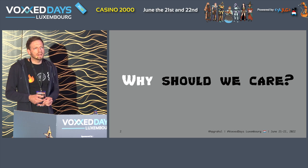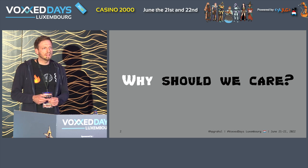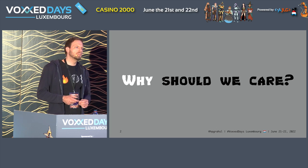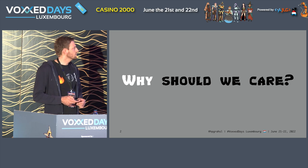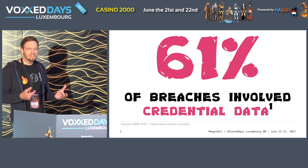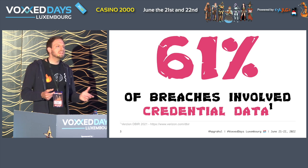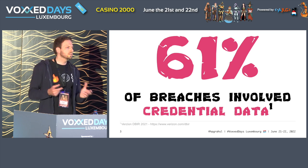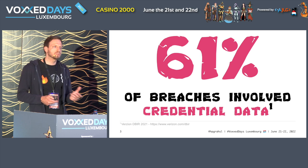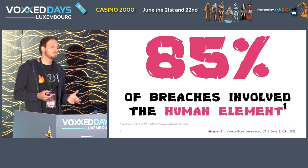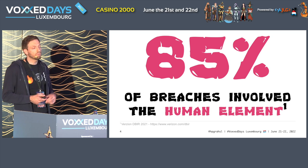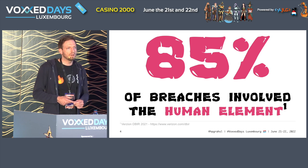Why does it matter? There are several studies out there investigating different forms of security incidents, some focusing on actual data breaches. I was looking at two such reports. First, the Verizon Data Breach Investigation Report shows that in 61% of the breaches analyzed, credential data was involved. That means it's not only security flaws or zero-day exploits which lead to data breaches. In fact, 81-85% of the cases involved what they call the human element.